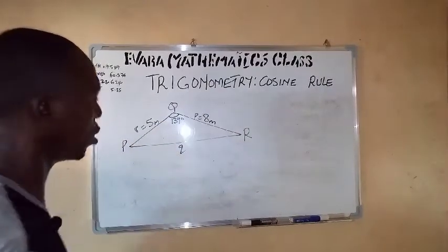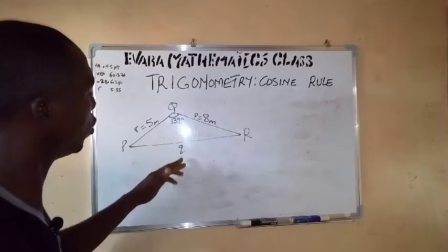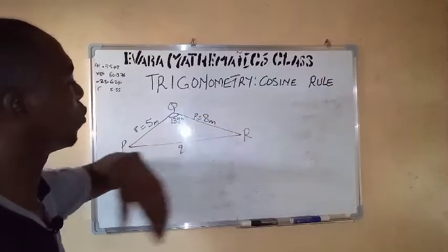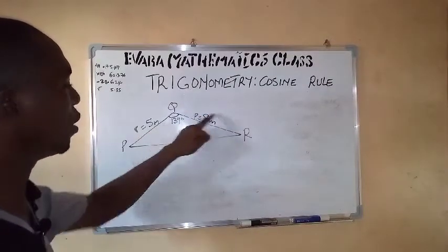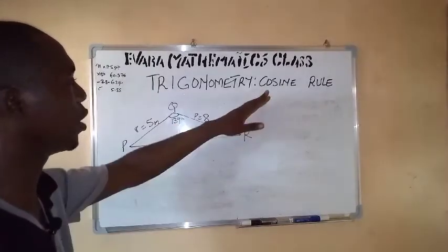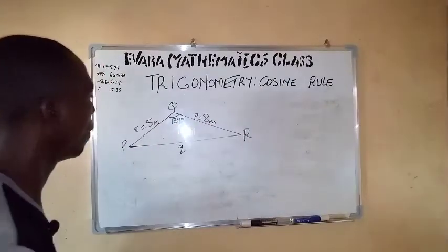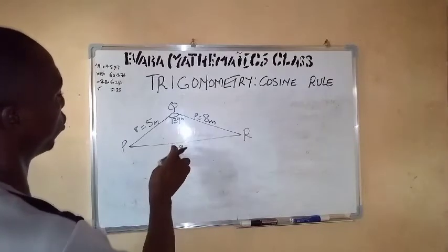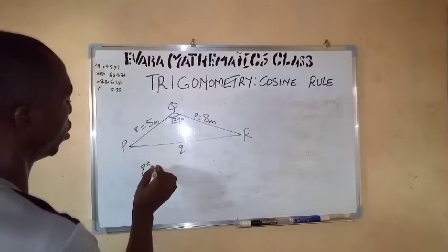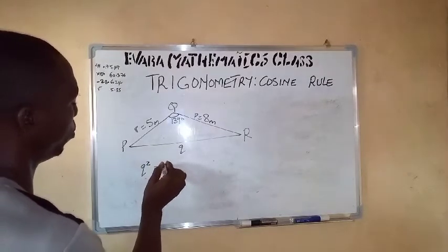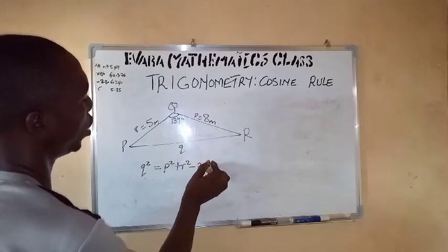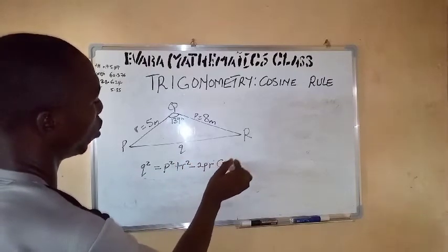Yes, because we have two sides and the included angle, so that means cosine rule is applicable. Now the formula we are going to use for this q will be q² = p² + r² - 2pr cos Q.